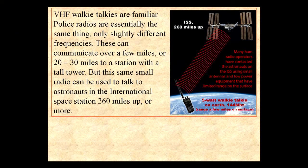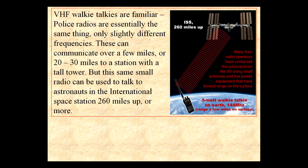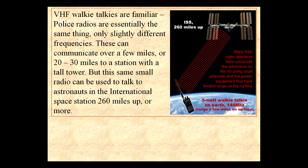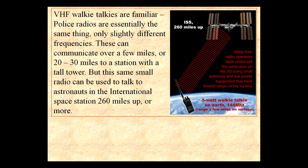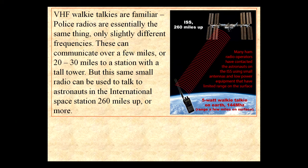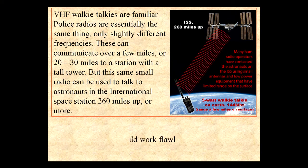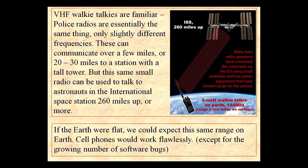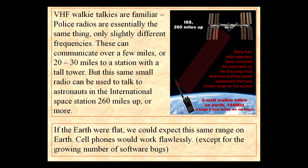VHF walkie-talkies are familiar — police radios are essentially the same thing, only at slightly different frequencies. These can communicate over a few miles, or 20 to 30 miles to a station with a tall tower. But this same small radio can talk to astronauts on the International Space Station 260 miles away. If the earth were flat, we could expect this same range on the surface, and cell phones would work flawlessly.